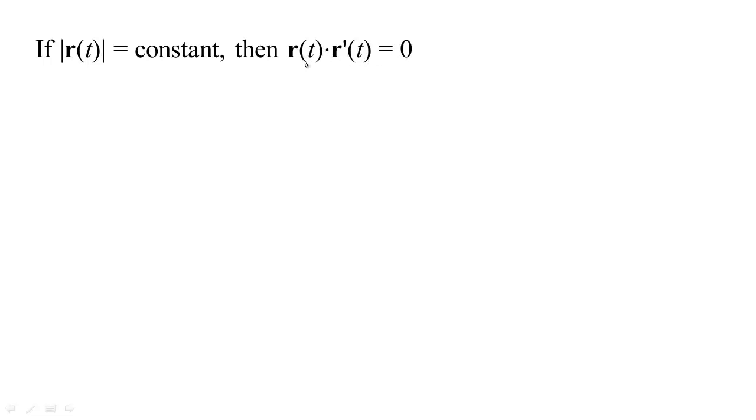In other words, the dot product of the vector with its derivative, the vector-valued function with its derivative, is going to be equal to zero. Okay, let's see, where does this come from?